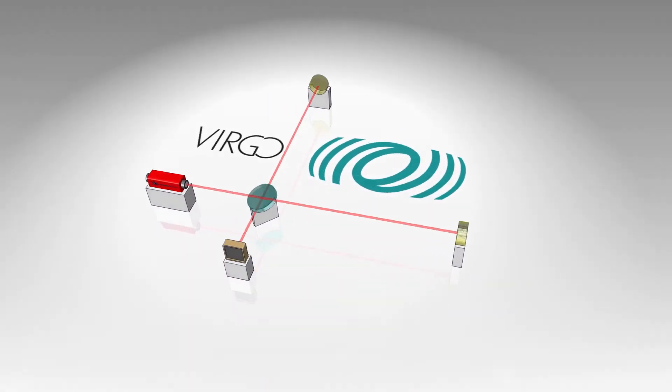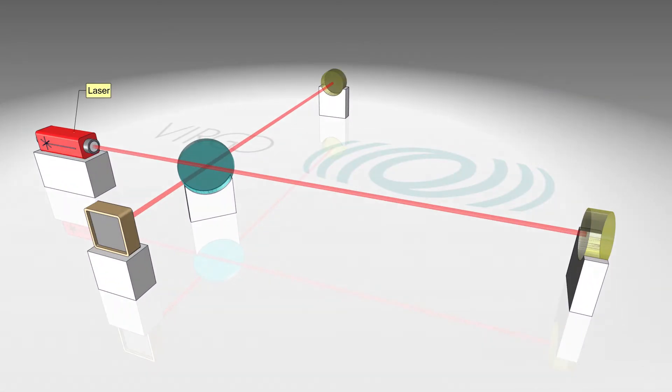In an interferometer, a laser beam is split into two beams. Mirrors reflect the beams so they meet again at the starting point.